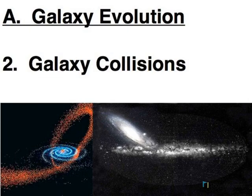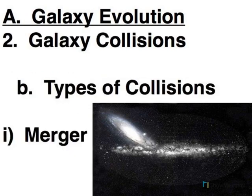Types of galaxy collisions. What determines the kind of collision is what kind of galaxies are involved. One type of collision is a merger, and in this case what we're looking at are two galaxies of similar size.